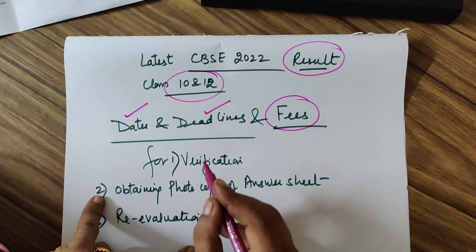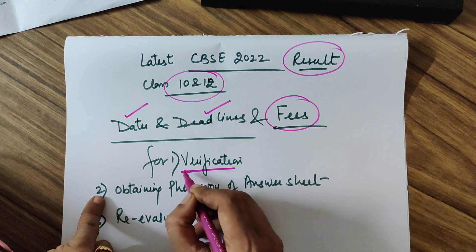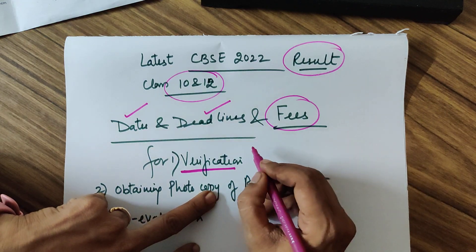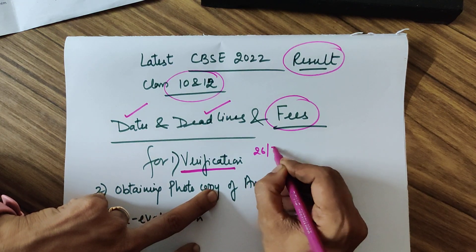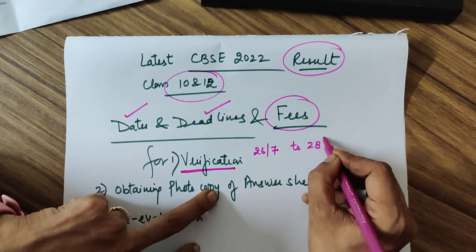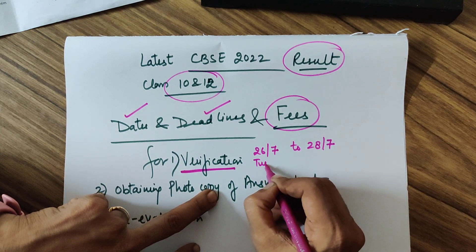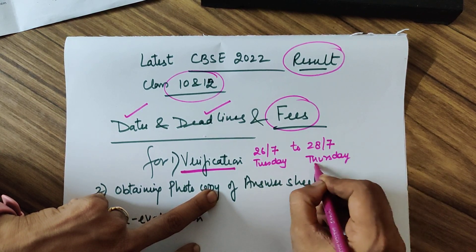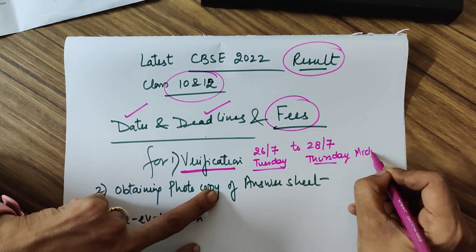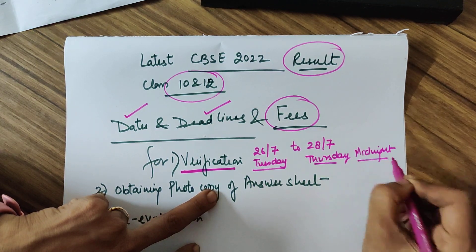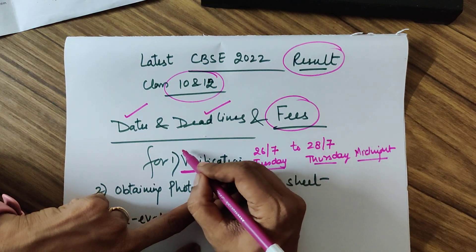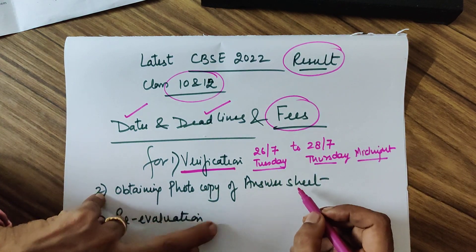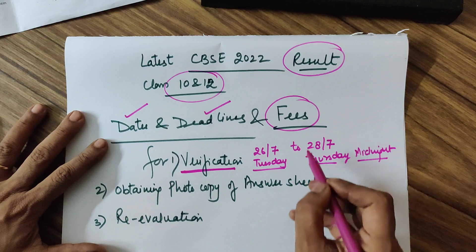As far as verification goes — when you want to check whether your marks are correct, meaning all questions are checked and totaling is correct — the date advised by CBSE is 26th July to 28th July, that means from coming Tuesday to Thursday. By midnight, 11:59 PM, this can be done. You can process your application for verification on the CBSE site by logging in with your credentials.